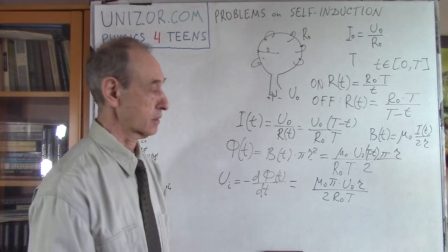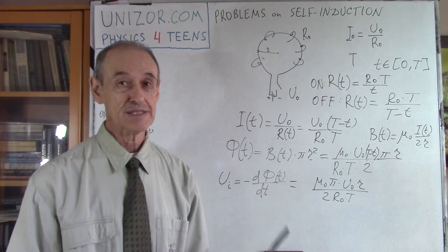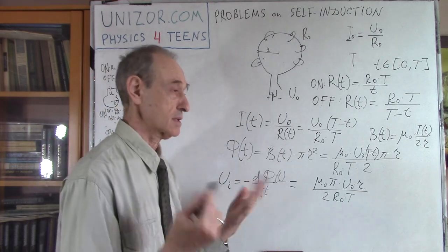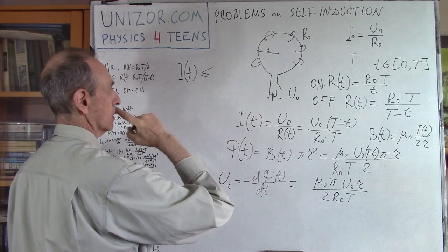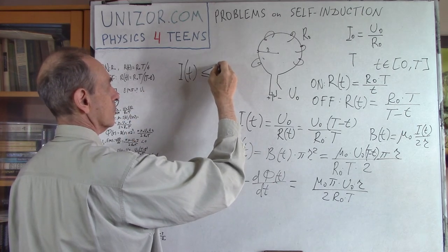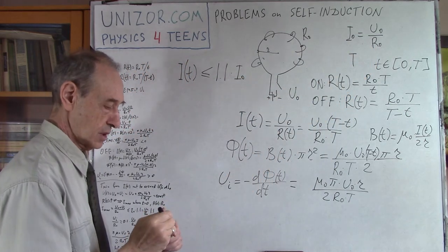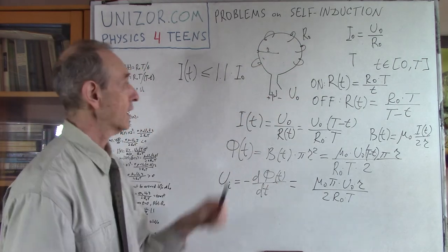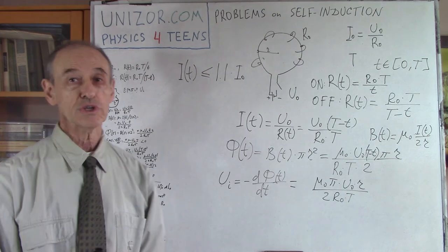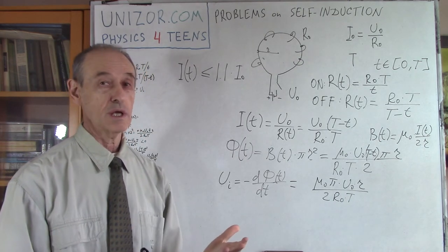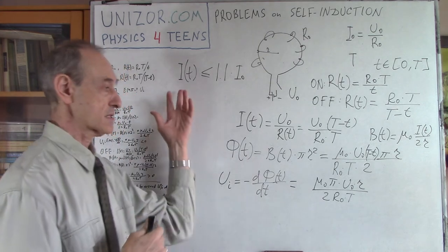My purpose for the second problem is: what is the minimum time T such that switching is safe? My definition of safe is that the current I(t) should be less than or equal to 1.1 times the nominal current I0 — I don't want more than a 10% increase. So the question is: what is the minimum T during which I am switching to satisfy this condition?